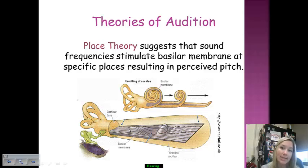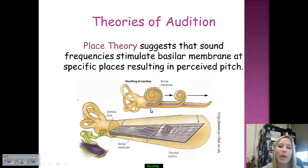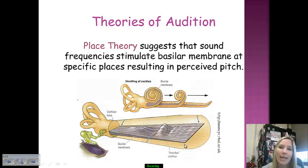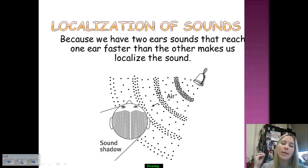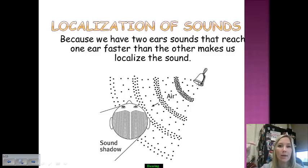The second theory is place theory, which says that once sound reaches the basilar membrane of the cochlea, specific places on that membrane are stimulated by specific frequencies, enabling us to perceive pitch. Sound localization is also interesting — because we have two ears, a sound can reach one ear slightly faster than the other. For example, a bell ringing to your right reaches the right ear first, allowing the brain to determine where the sound is coming from.